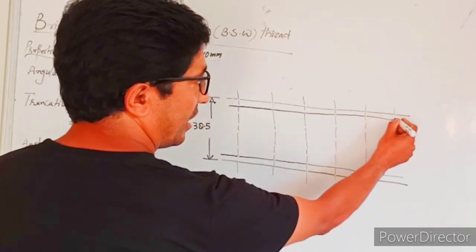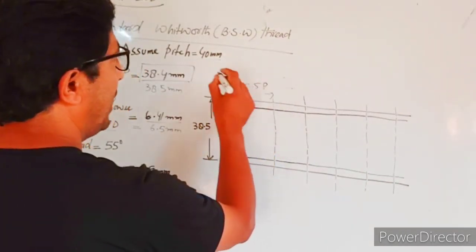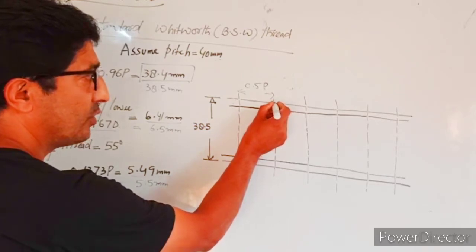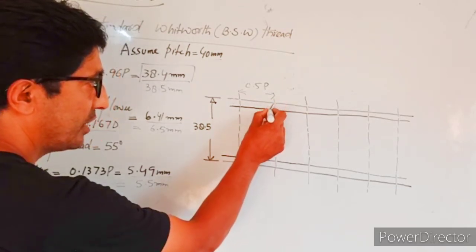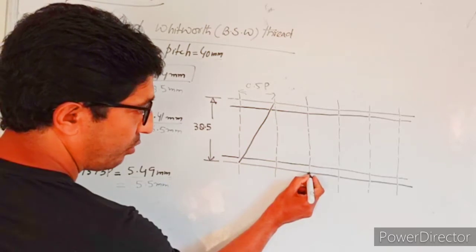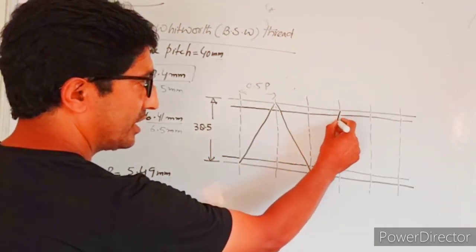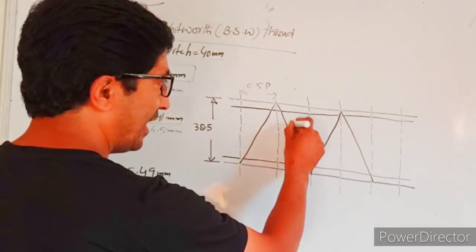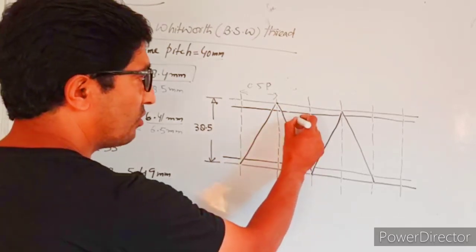You can see the distance from this to this is half of the pitch, and that is 0.5p, which is 20mm. Now what we need to do is connect this point to the second vertical line's top point, and from the first line's bottom point. Connect this point to this bottom point, this point to this point, this with this, and this point with this. These are called the flanks. Flanks is the distance between crest and root.